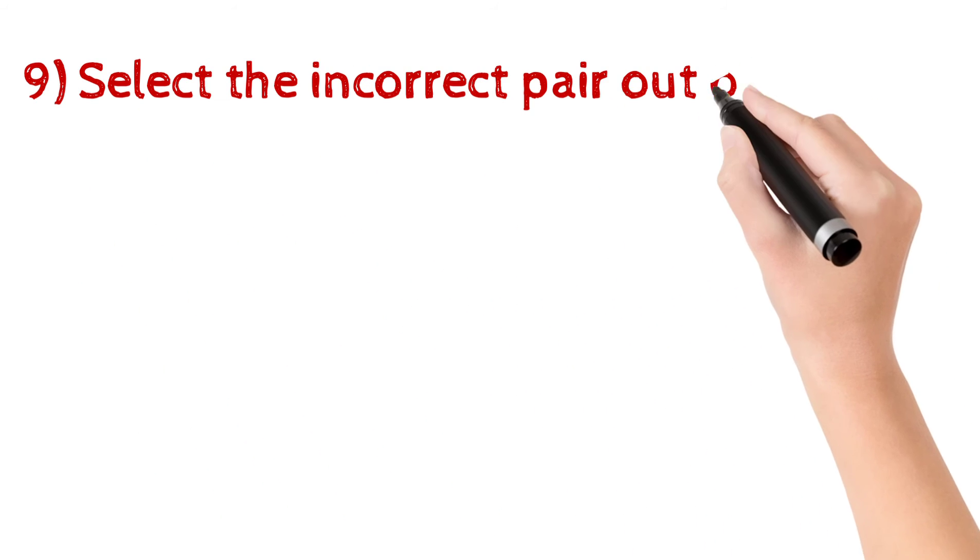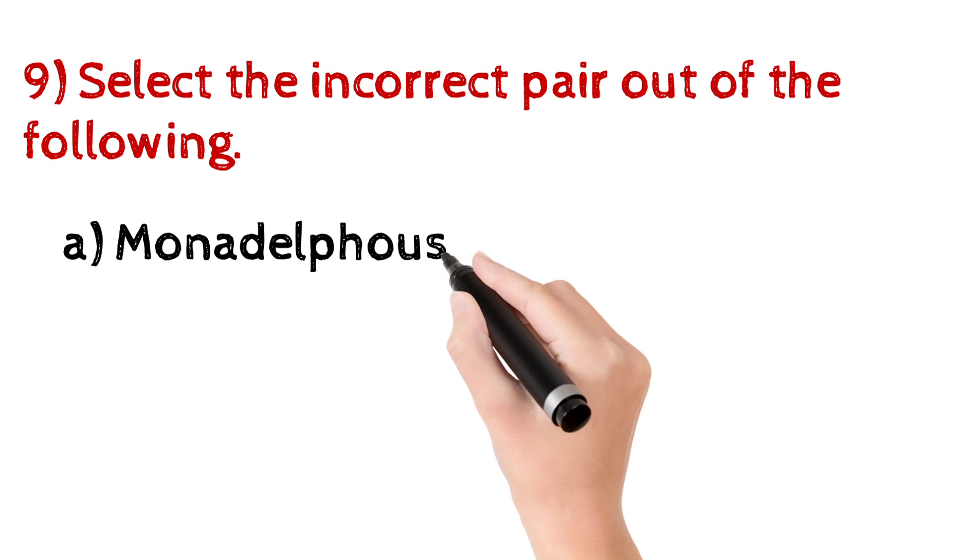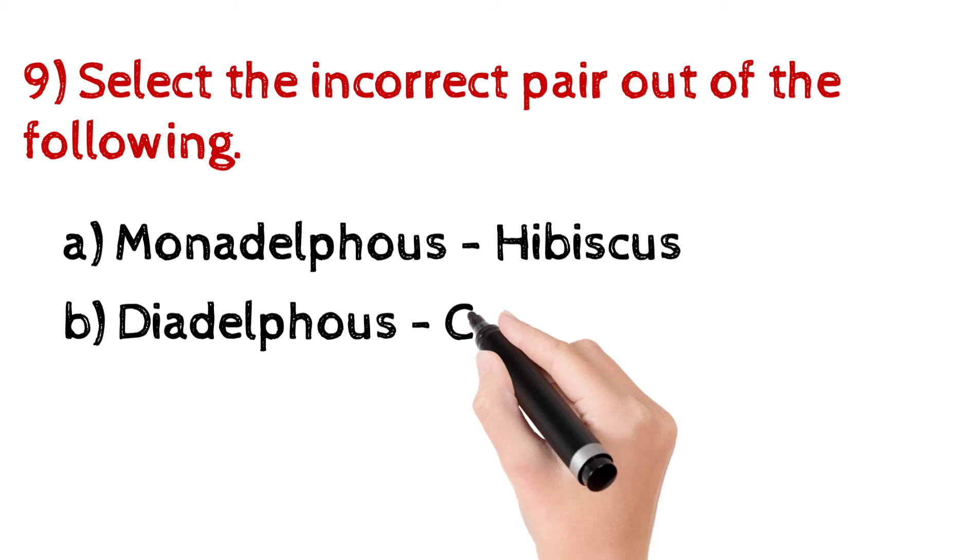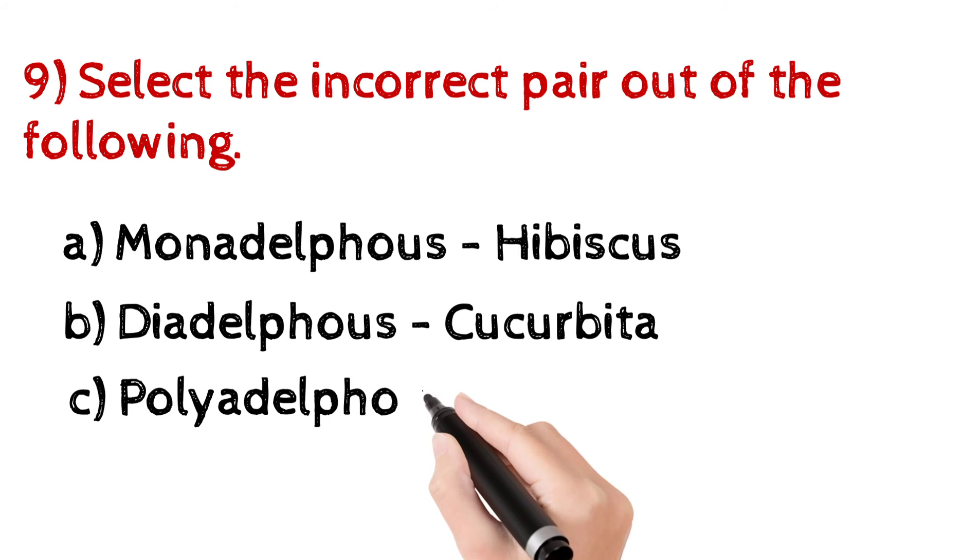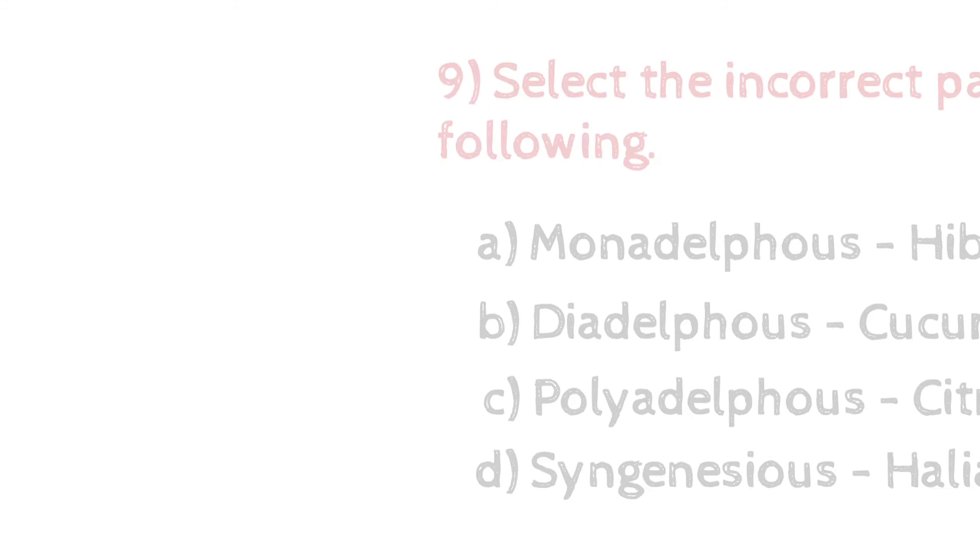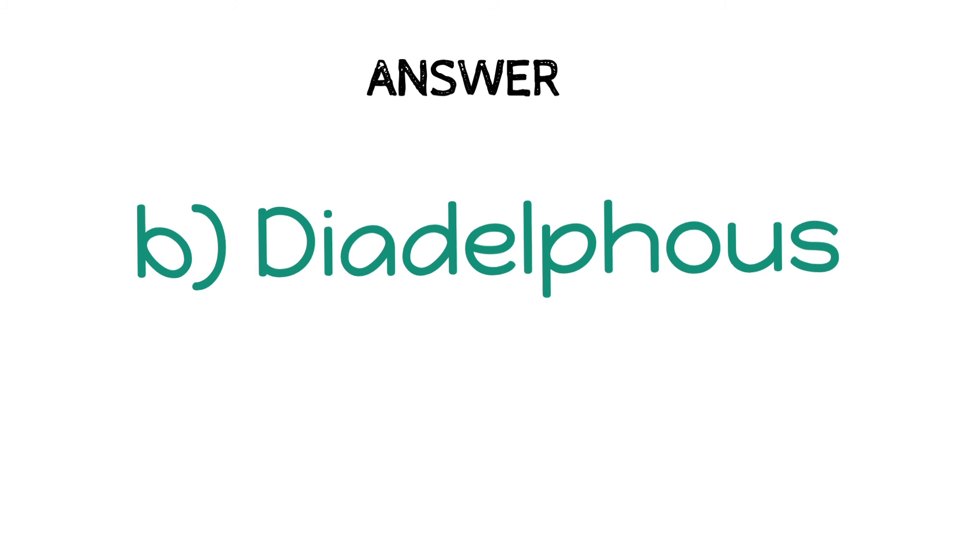Question number 9: Select the incorrect pair out of the following. A. Monadelphous Hibiscus, B. Diadelphous Cucurbita, C. Polyadelphous Citrus, D. Syngenesious Helianthus. And the answer is B, Diadelphous Cucurbita.